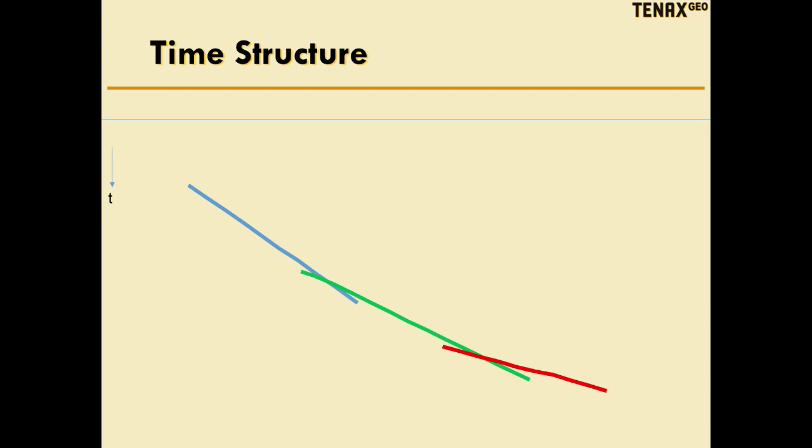If you interpret lines corresponding to the events in time, you notice how basically the events cross at certain points. So that's certainly not consistent with the geology.